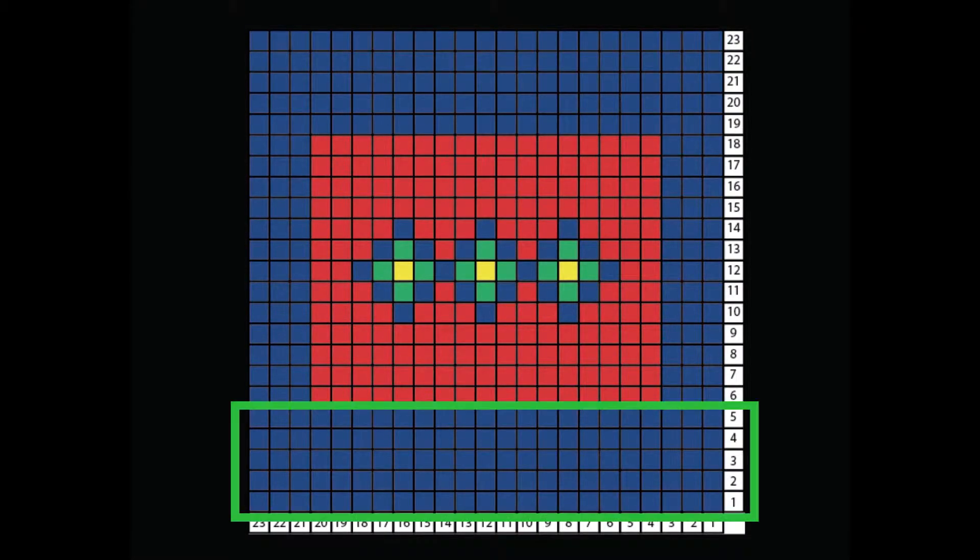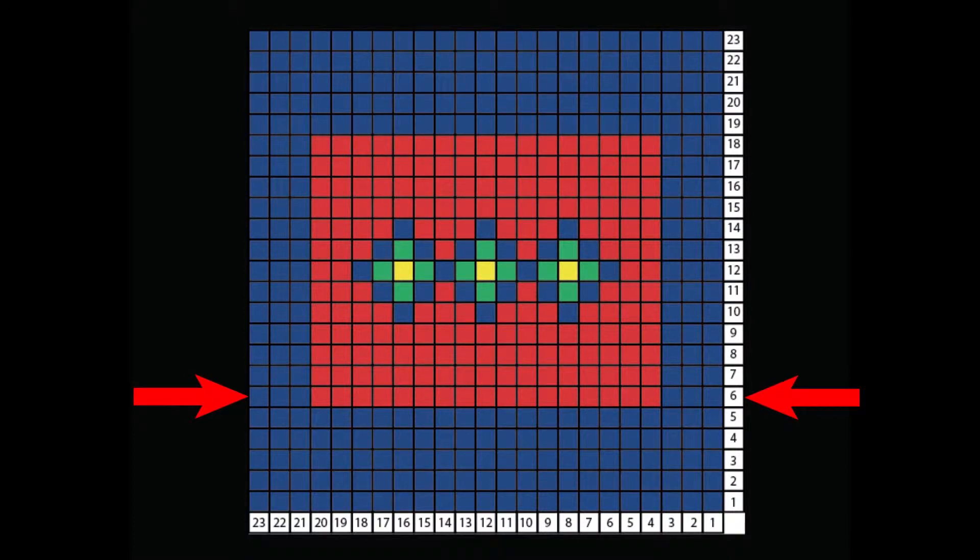After we have woven five rows of blue knots, according to our design it is time to add a new color to the weave. We will need three blue knots on either end and the rest will be red.